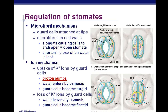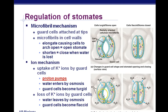To close the stomates, the same mechanism works in reverse: potassium ions are pumped out, creating a hypertonic solution on the outside. Water then leaves by osmosis, the guard cells become flaccid, and they close up. To review: protons are pumped out, potassium and protons flow back in via active transport, creating a hypertonic solution inside the guard cell; water flows in by osmosis, opens the guard cell and the stomate.